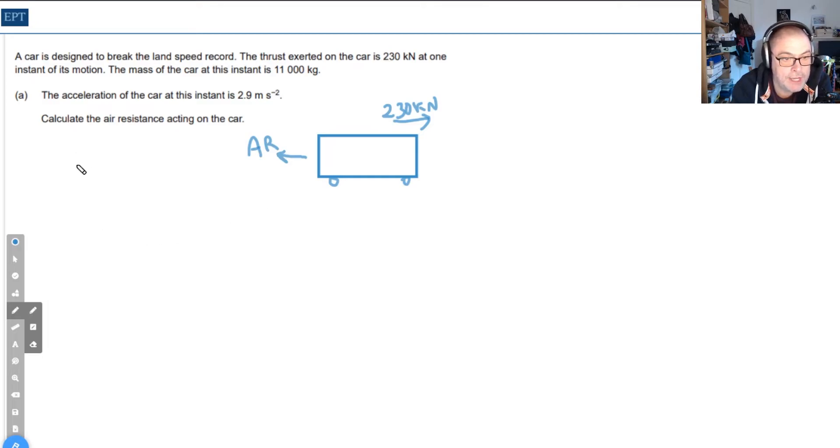We also know there's an acceleration of 2.9 meters per second squared, so we can work out the resultant force pushing to the right. It's going to be equal to 2.9 times the mass, which is 11,000 kg, giving us 31,900 newtons.